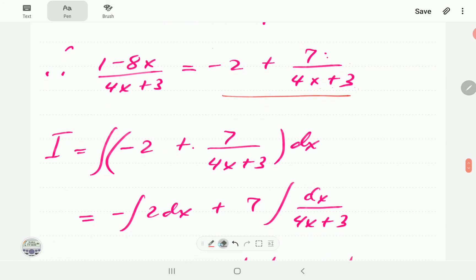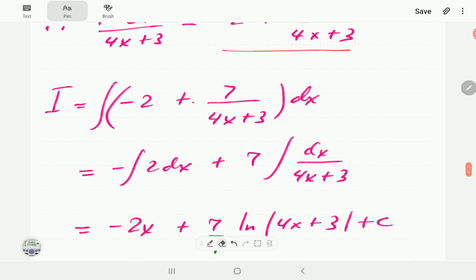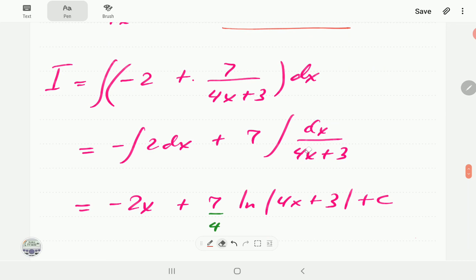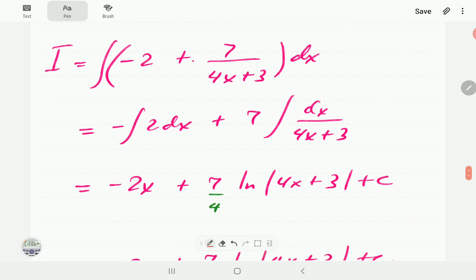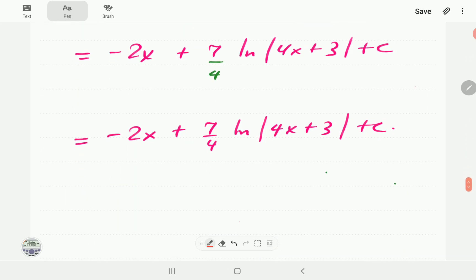So that means this rational expression we can write in that form there. And then if we plug it into the integral, this just integrates to minus 2x. This one on the other hand, the coefficient of x is four so we're going to have to divide by four so it's just ln of this divided by four. And so that is going to be our final expression: -2x + (7/4)ln|4x + 3| + C.